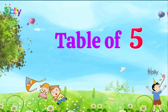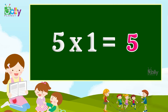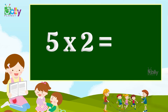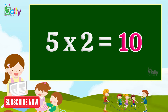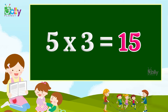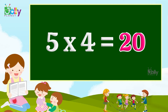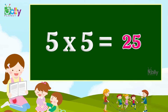Table of five. Five one's are five. Five two's are ten. Five three's are fifteen. Five four's are twenty. Five five's are twenty-five.